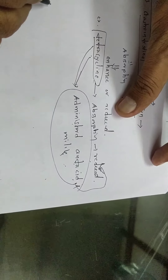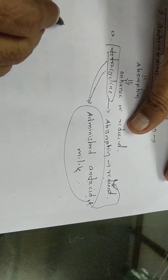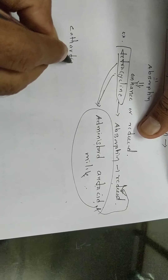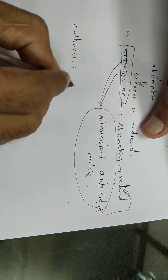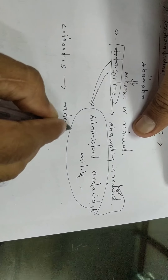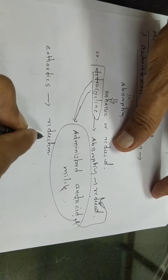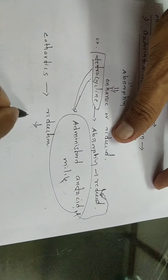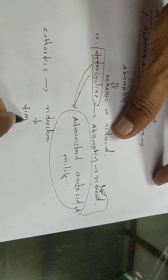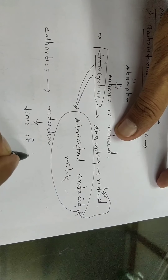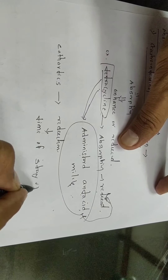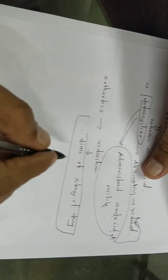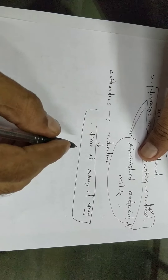Cathartics are drugs that reduce the time the drug stays in the GI tract — the time of stay of the drug after administration — that is important. Reduction in drug absorption occurs because less time is spent in the GI tract.